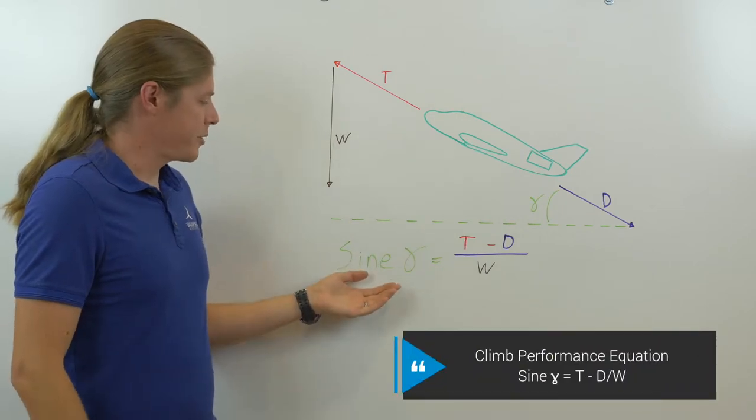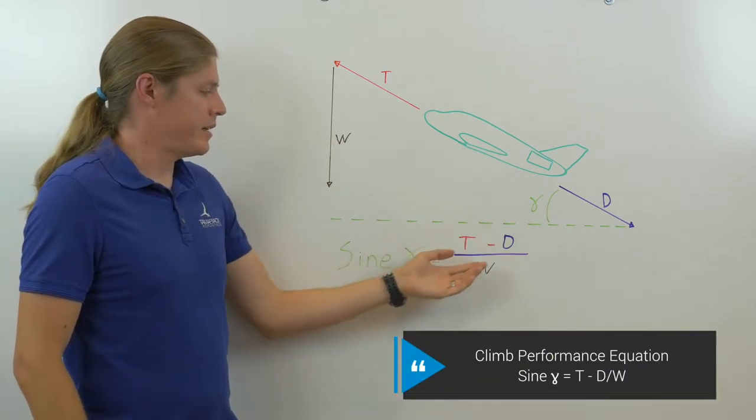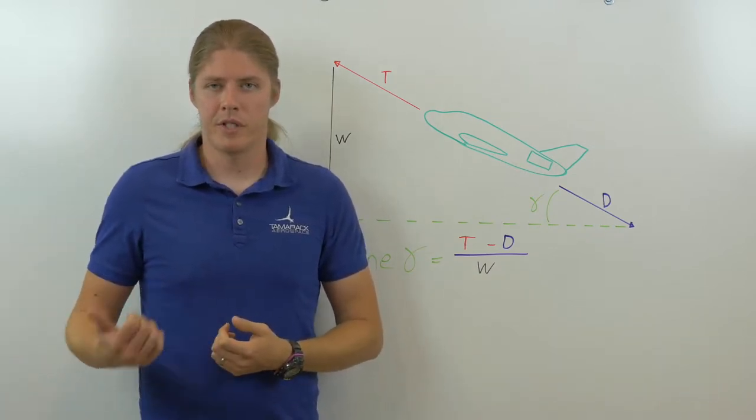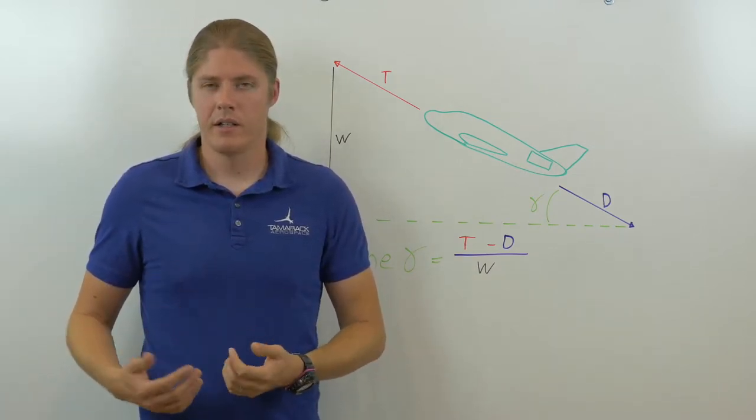The relation that it forms is sine gamma equals T minus D over W. Now, we have thrust decks, which are relations of temperature, pressure, altitude, etc., to thrust.